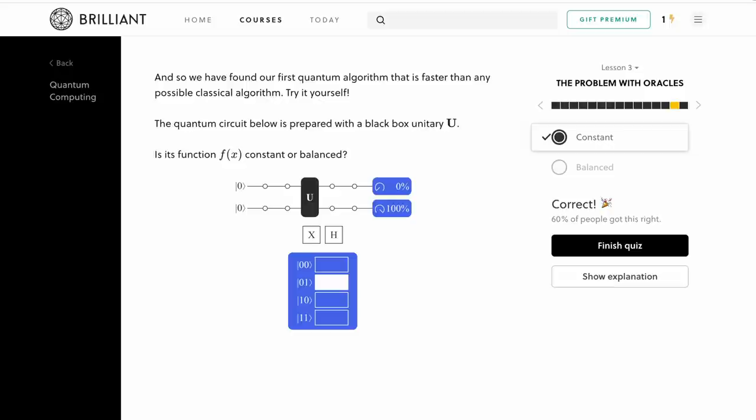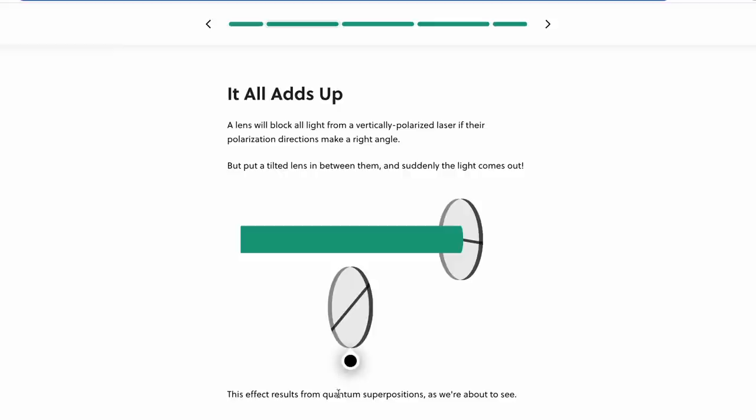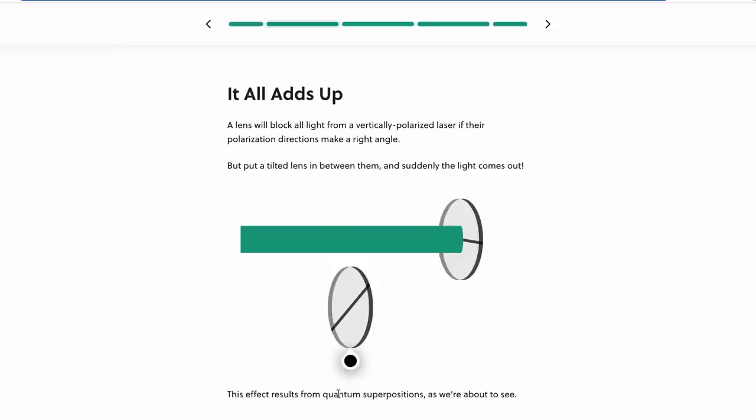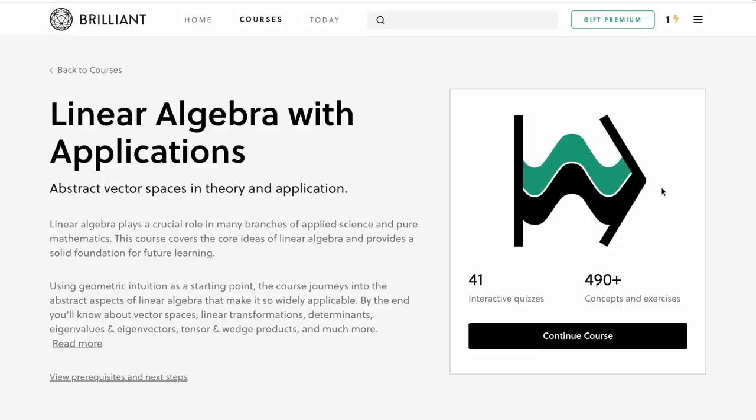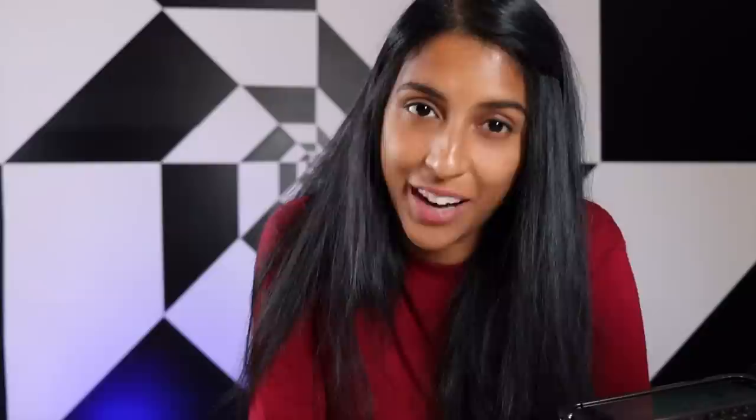This video is sponsored by Brilliant, which I'm really pleased about, because up until recently, I was working for Brilliant, and I really love what they do. Brilliant has some great courses on quantum mechanics, including a new course by Sabine of YouTube fame, and a course on quantum computing. These courses use interactive tools so that you can learn quantum mechanics in a really hands-on way. Another one I really highly recommend is a course on linear algebra. So to get started for free, visit brilliant.org slash looking glass universe, and the first 200 people get 20% off their annual subscription.